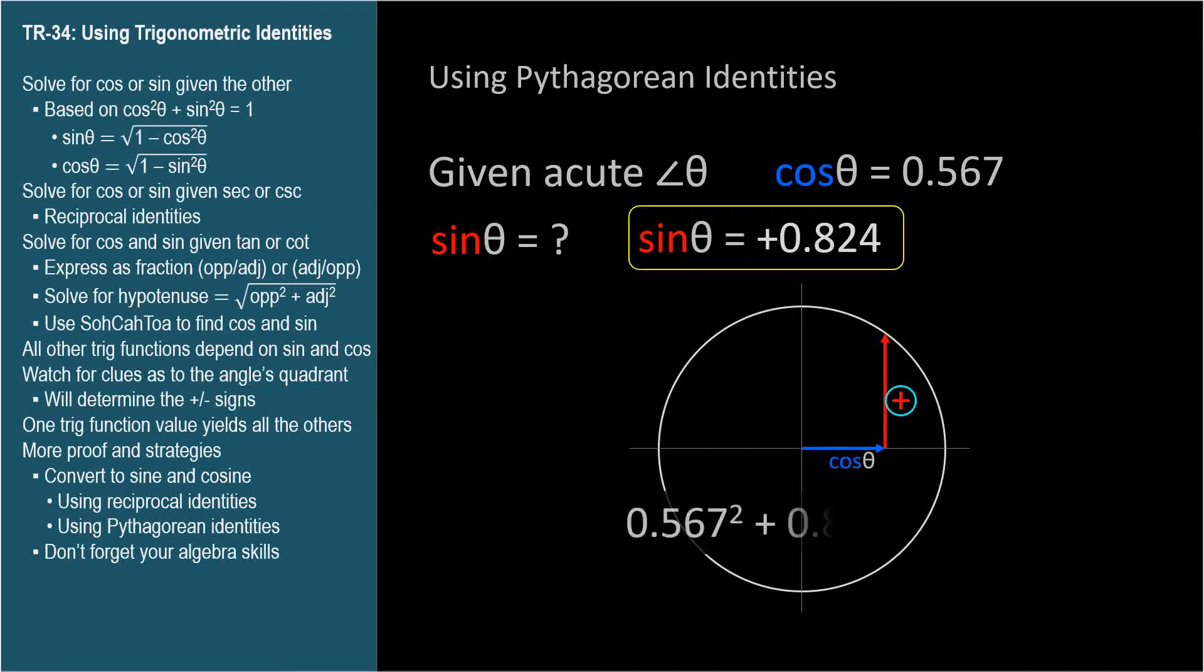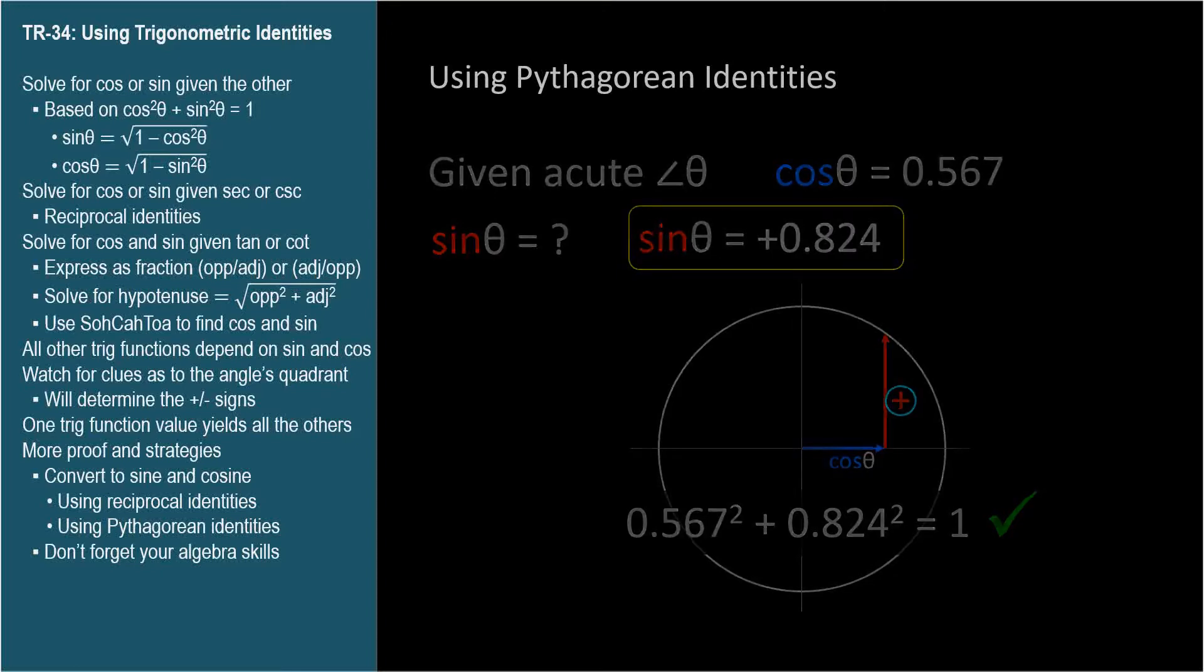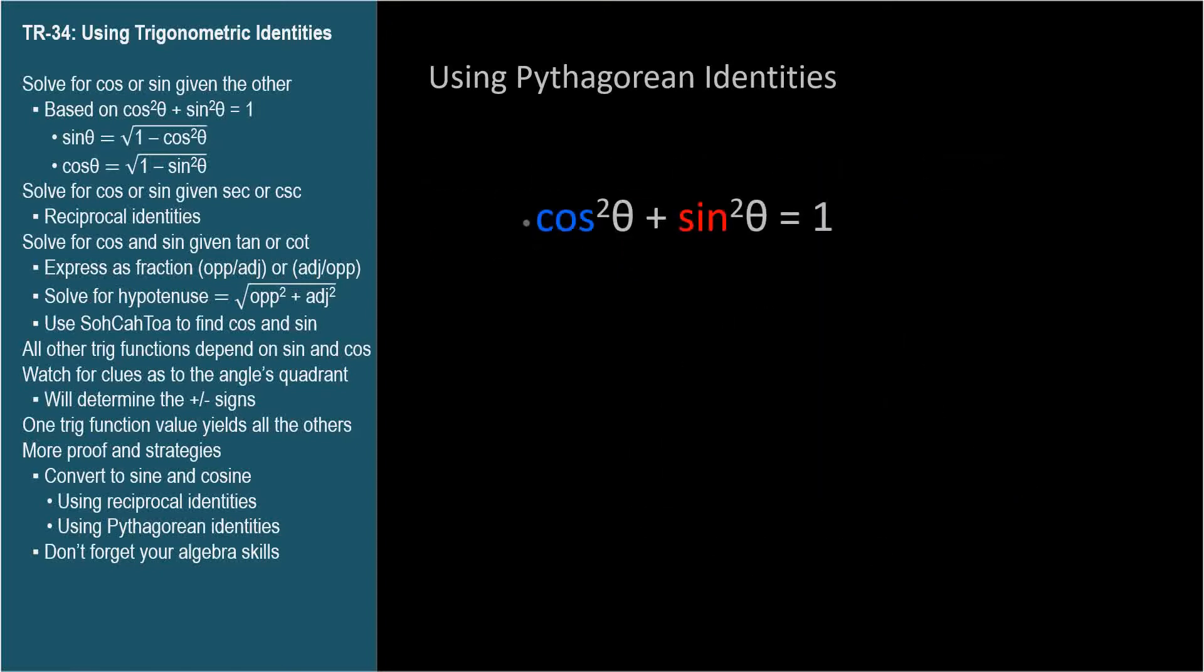It's easy to check our work. The squares of the cosine and sine should add up to 1. So if you know the cosine or sine of an angle, you can find the other using the main trig equation.